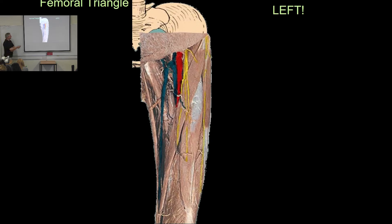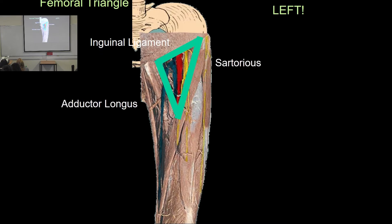The posterior muscles include the hamstrings, made up of the biceps femoris on the lateral aspect and the semimembranosus and semitendinosus on the medial aspect. A key area for the anatomy exam is the femoral triangle. Its base is the inguinal ligament between the anterior superior iliac spine and the symphysis pubis, the adductor muscles form the medial border, and sartorius forms the lateral border. Inside the triangle are the femoral nerve, the superficial femoral artery, and the femoral vein.